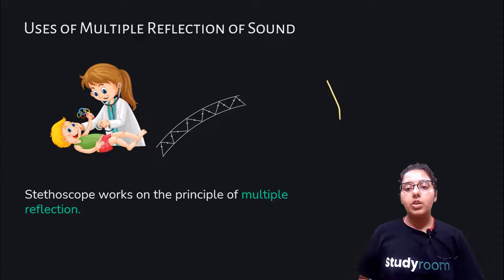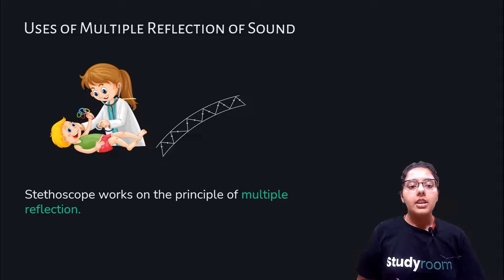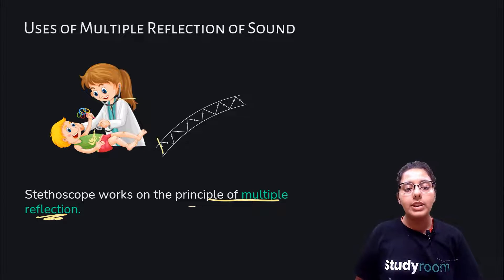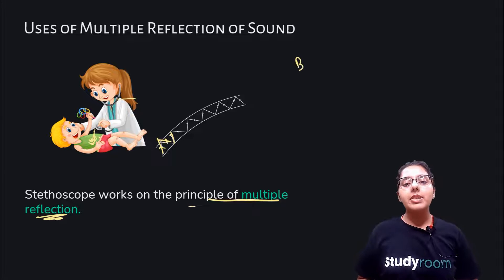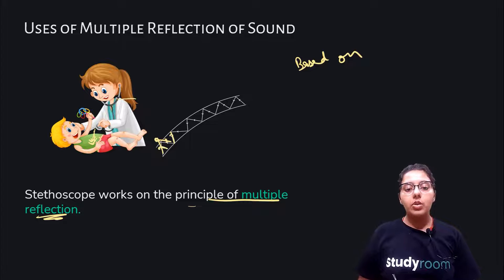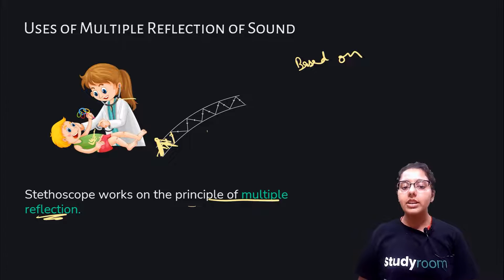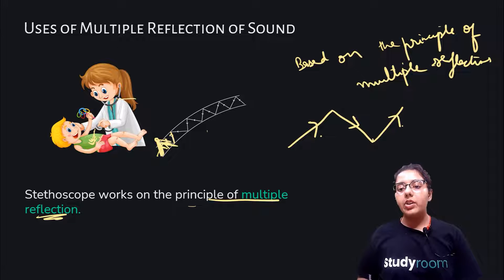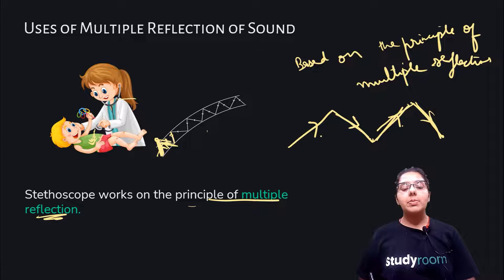Doctors use stethoscopes, which work on the principle of multiple reflection so that the sound doesn't spread in all directions but travels through the device in a directed path. One reflected ray becomes the incident ray for the next reflection. If this is your incident ray, this is your reflected ray; for that reflected ray, the previous ray is your incident ray — and so on. This is how the principle of multiple reflection works.